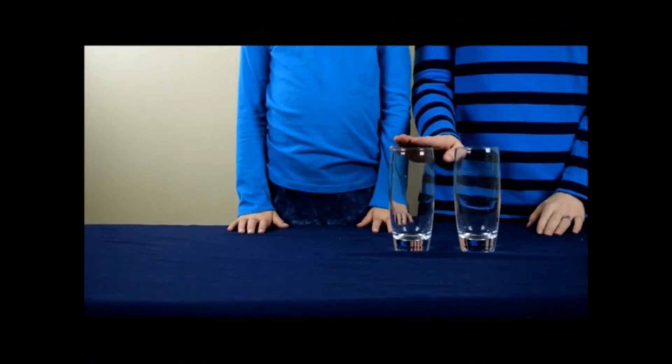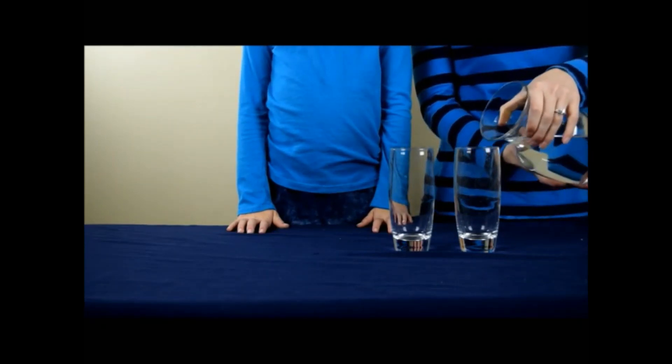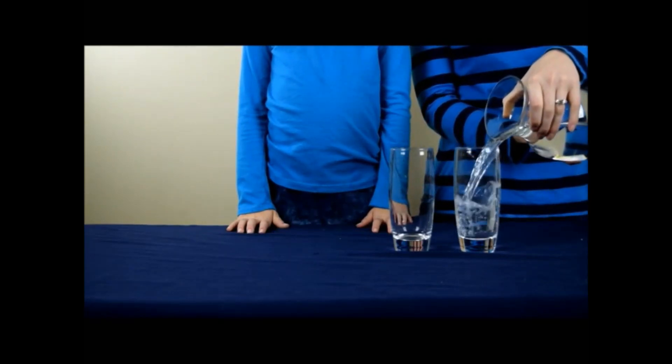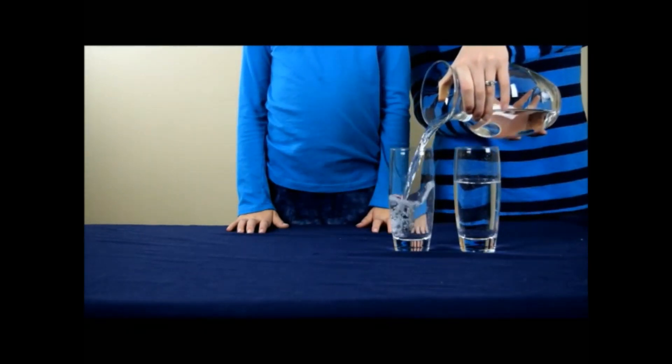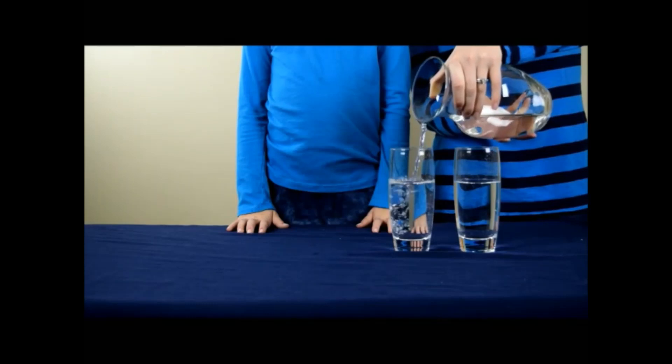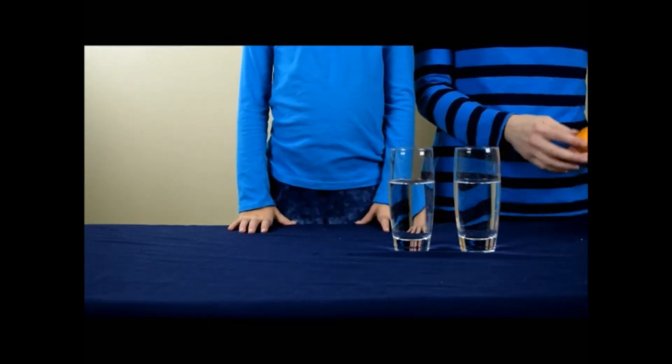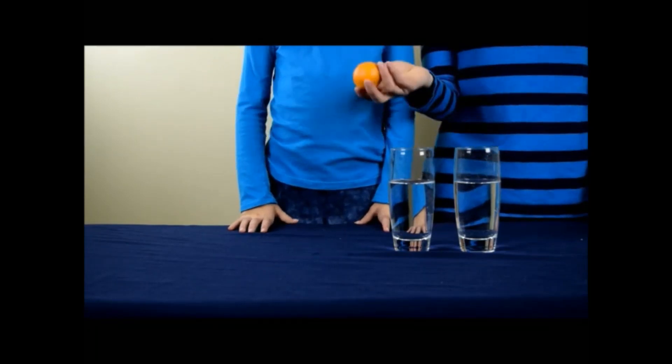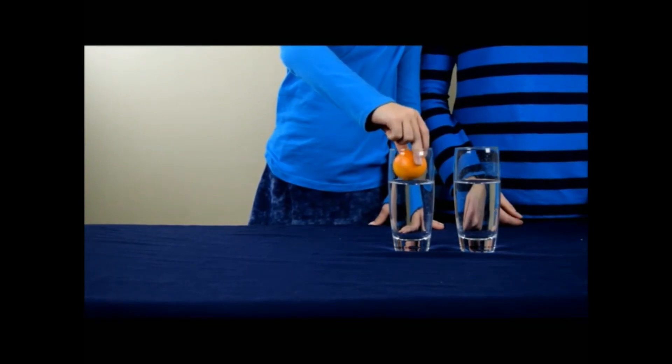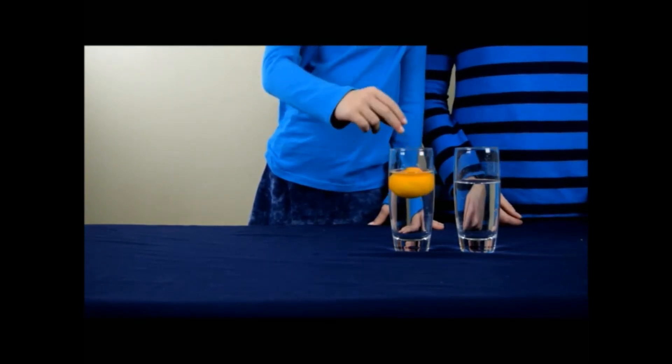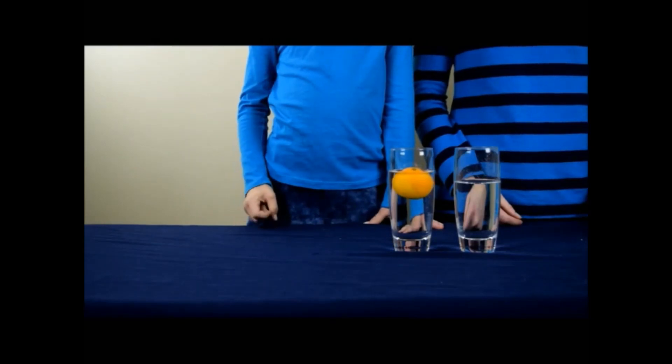To begin the experiment, you're going to need two empty glasses, and you're going to fill both of them with water. Now, we're going to take an orange, and we're going to slowly and carefully put it in one of the glasses. And as you can see, the orange floats.